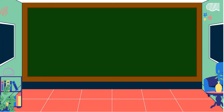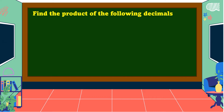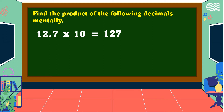Let's have some exercises. Find the product of the following decimals mentally. Twelve and seven-tenths times ten. The answer is equal to one-hundred-twenty-seven.